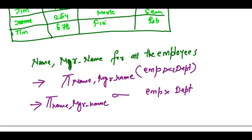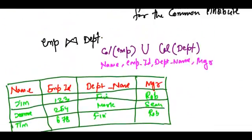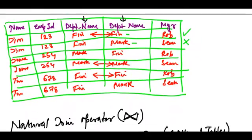We will use the cross product. In the cross product we will say the condition is employee dot department name is equal to department dot department name. So effectively this gives me a natural join.